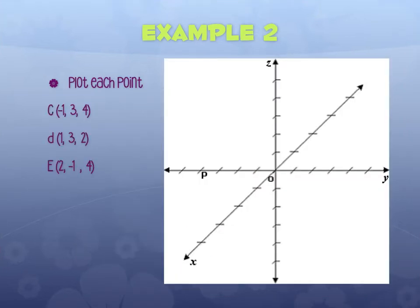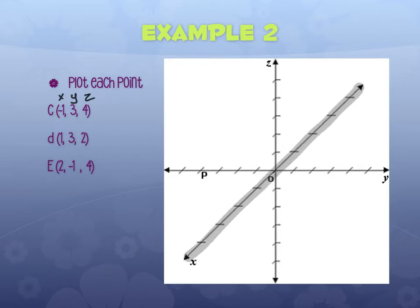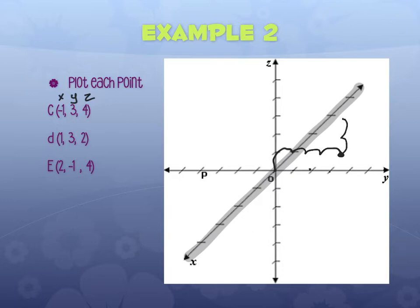Now let's plot points. Notice on this diagram the x-axis is forward, the y-axis is right and left, and z is up and down. To plot (−1, 3, 4): start on the x-axis and move back one place. Then move three units to the right parallel to the y-axis — it's kind of on a slant. Then move up four: one, two, three, four. And there's the point (−1, 3, 4).